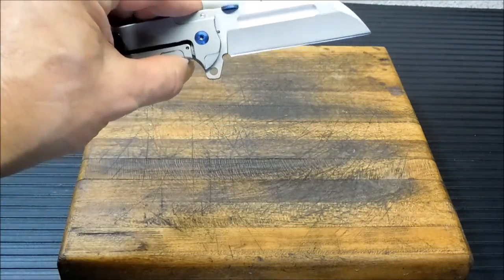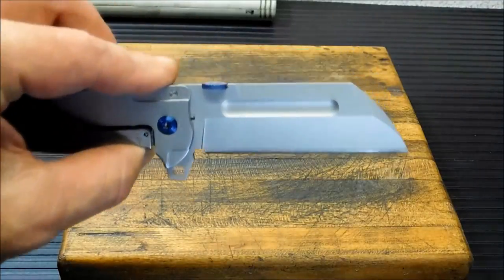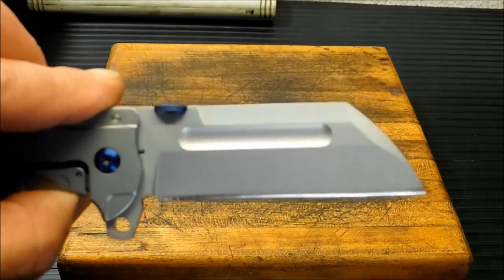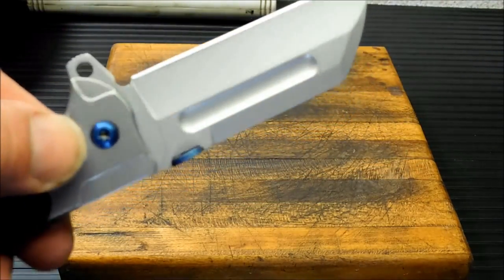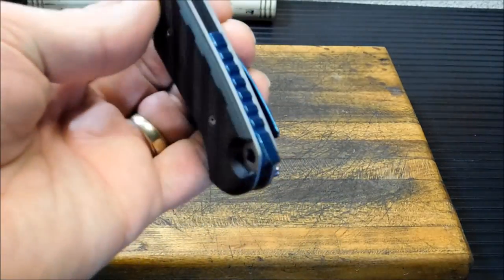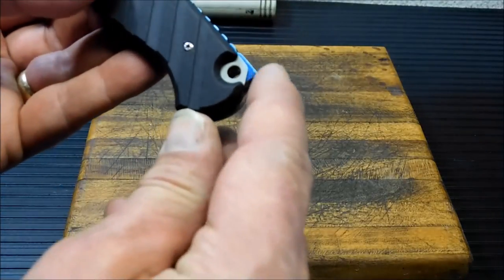It is a hollow ground, kind of a wharncliffe cleaver kind of looking blade. Give you a close look at the blade shape up front. And this thing came razor sharp from the factory. You have your little blue highlights, your torque screws, your thumb stud, and that little liner in the back. I'll talk about this little edge here later. Some people have had a problem with it. Me, I haven't.